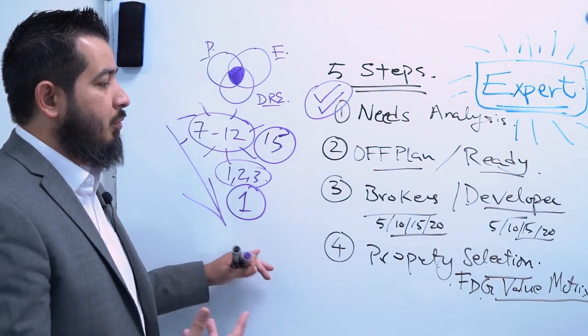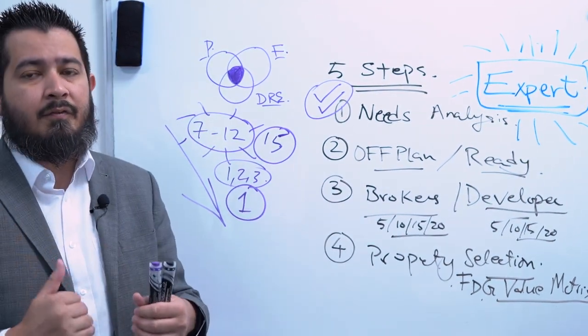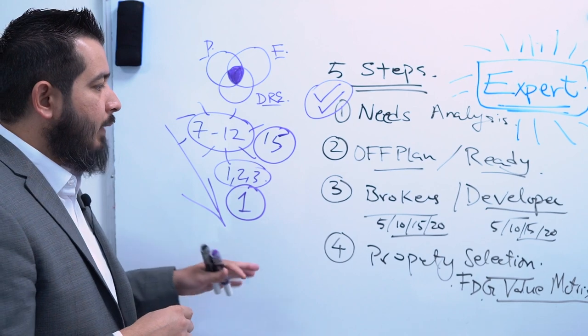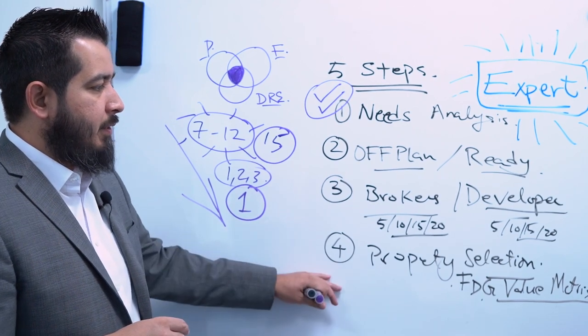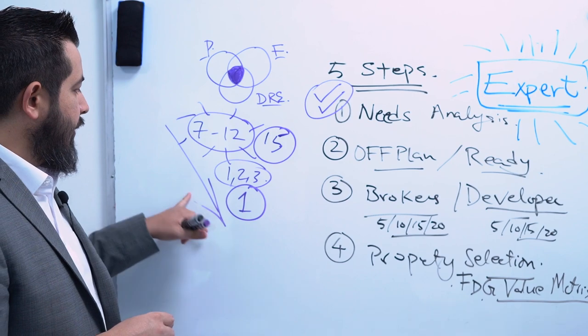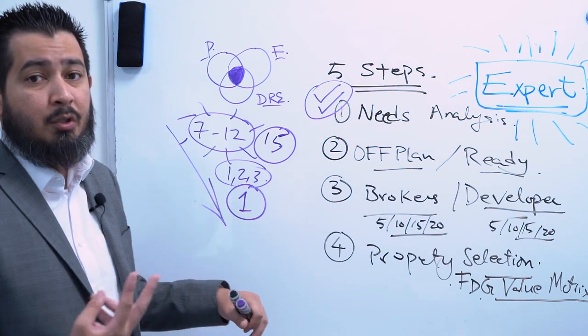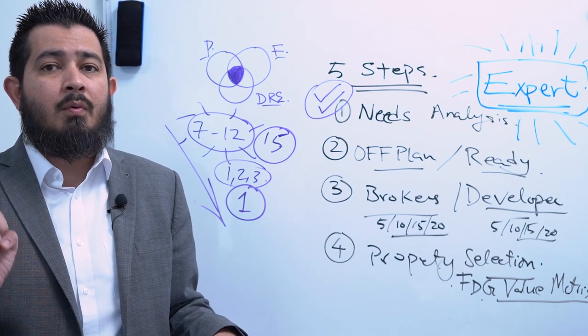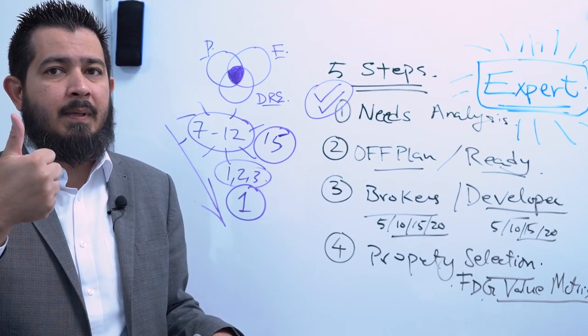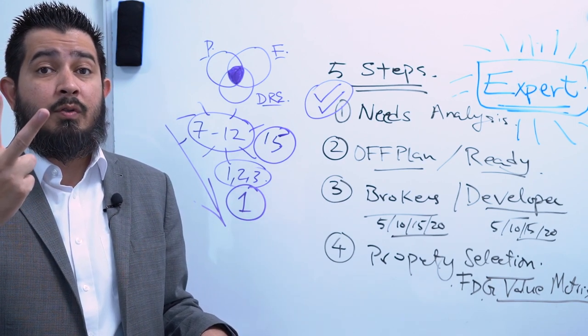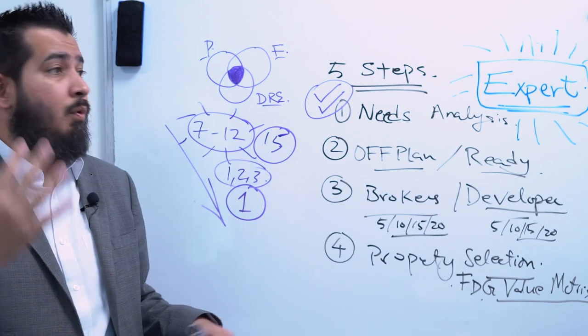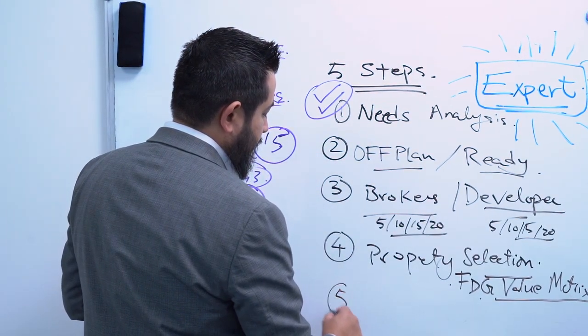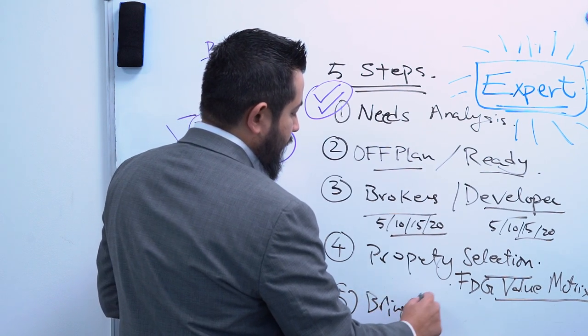The FDG value matrix allows you to assess a property on a lot of variables, about 10 to 15 variables. I'm always adding more variables. And then what you do from the FDG value matrix is you go through the selection process and then see which one property or two properties makes sense. Essentially, when we're working with our investors, we do five things on it, which is, essentially speaking, selection, evaluation, due diligence, qualifying or disqualifying as per the needs analysis. Last but not the least, the most critical part, bring the property home.